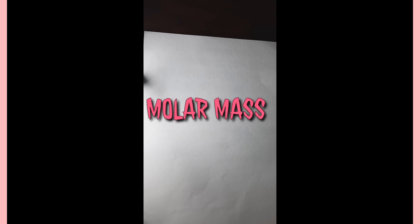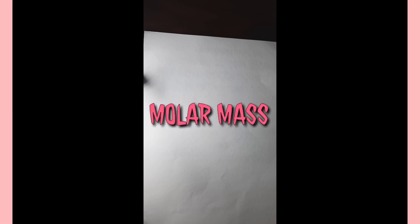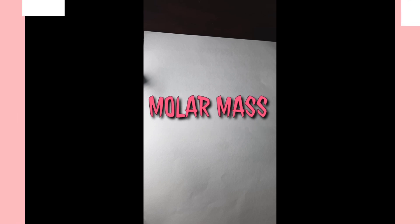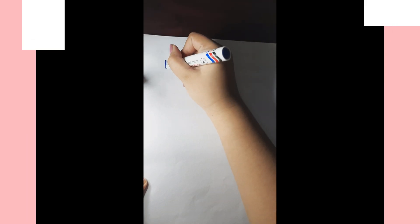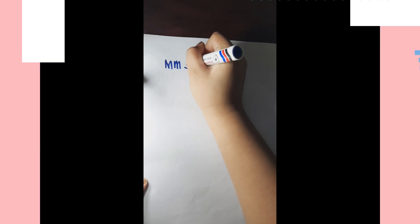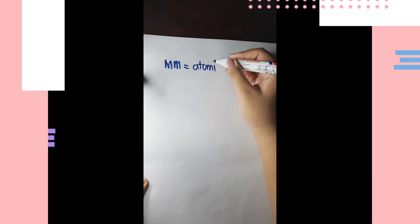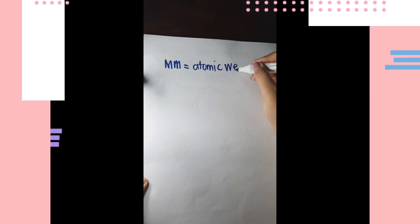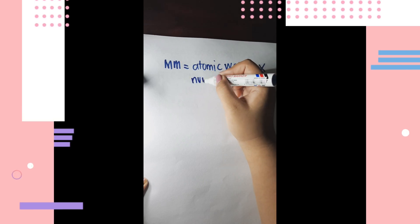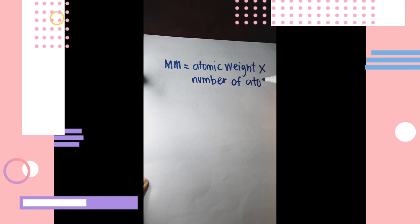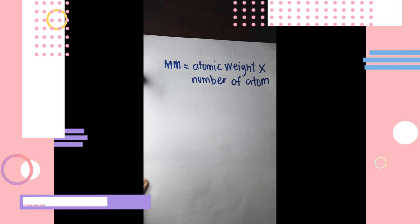Before we start with percentage composition, you must recall how to get the molar mass. Molar mass is equal to the atomic weight multiplied by the number of atoms. For example: